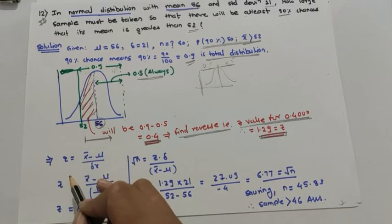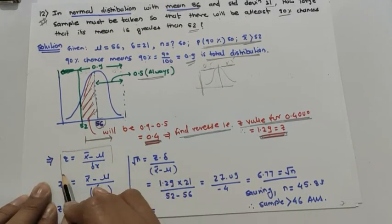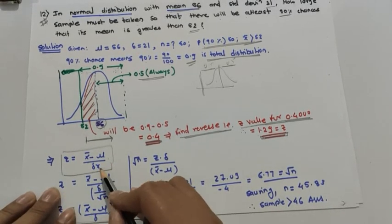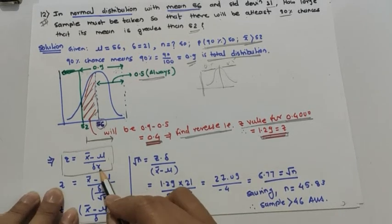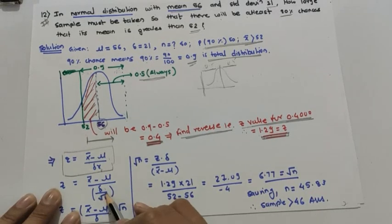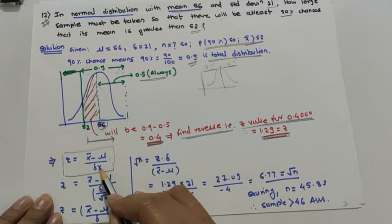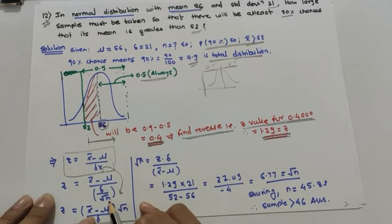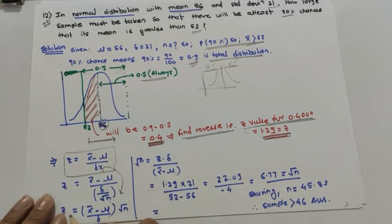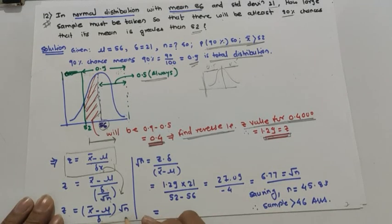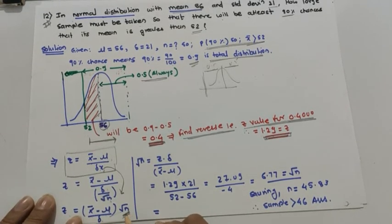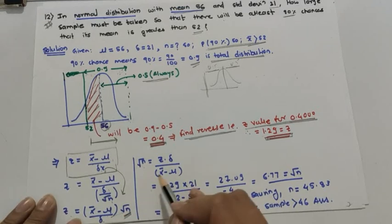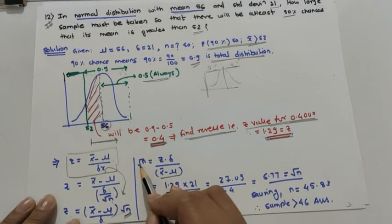Now, coming back to the formula from previous videos: z equals x-bar minus mu divided by sigma-x, where sigma-x is sigma upon square root of n, or delta upon square root of n. Rearranging to find n: z equals x-bar minus mu upon delta into square root of n, so square root of n equals z into delta divided by x-bar minus mu.